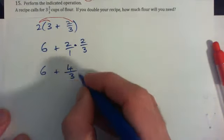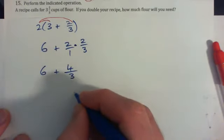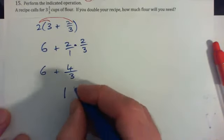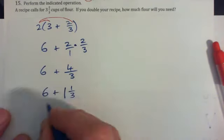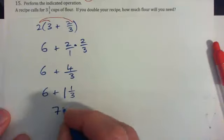Now, we've got to write this as a mixed number. Three into four goes once, remainder one. So one and one-third. So six plus one and one-third makes seven and one-third.